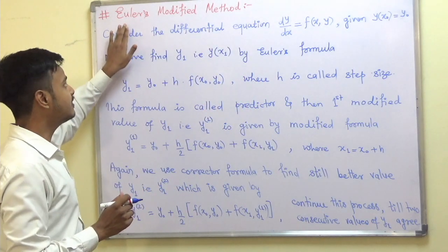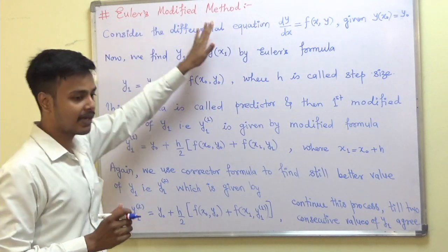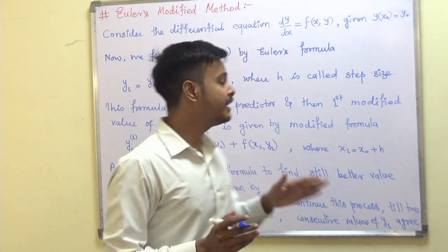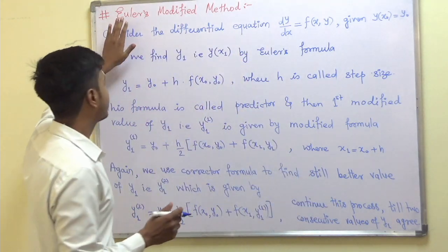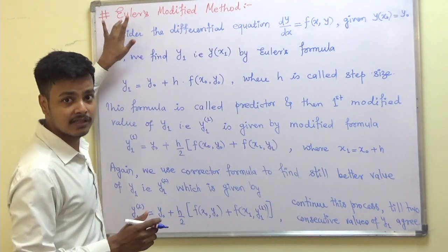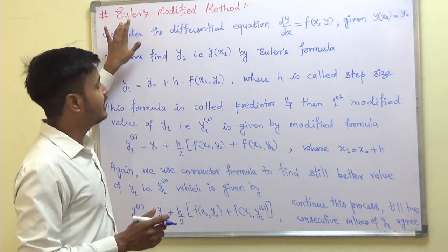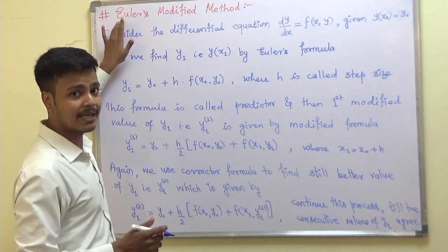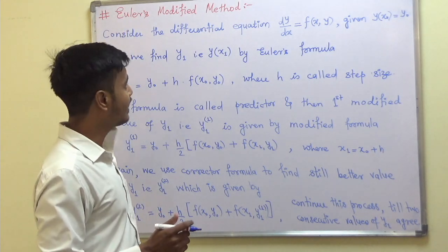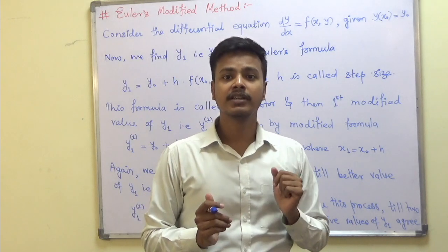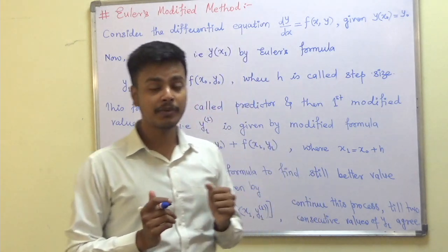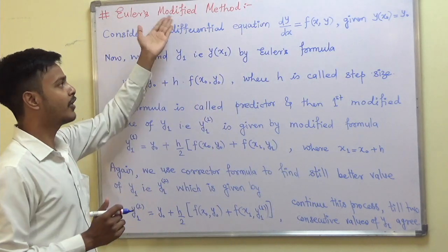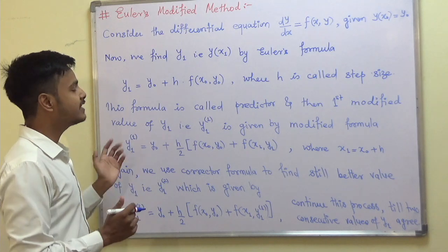In this learning video we are going to take the method named Euler modified method. Many of you might be reading this as 'euler' — that is an incorrect pronunciation. The correct name is 'Eiler'. So that is the topic we have in today's class: Euler's modified method.